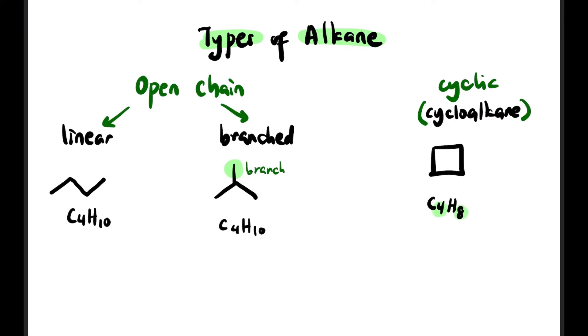Because the general formula for open chain is CnH2n+2, while for cyclic or cycloalkanes it's CnH2n. So cyclic alkanes or cycloalkanes are actually functional group isomer pairs with alkenes because their general formulas are the same: CnH2n.